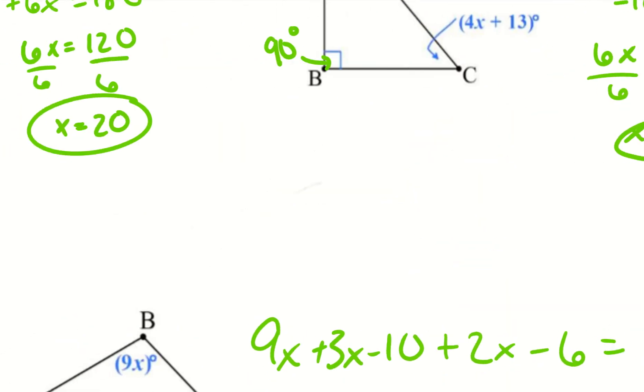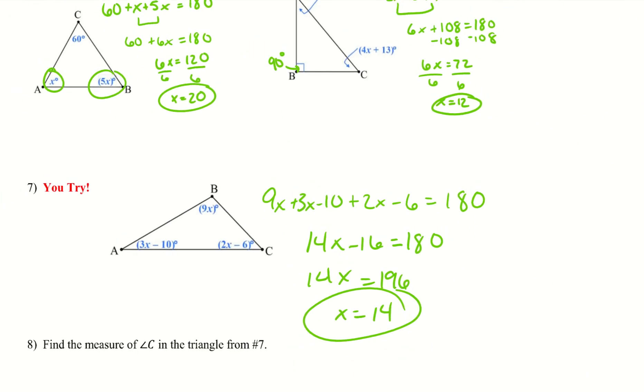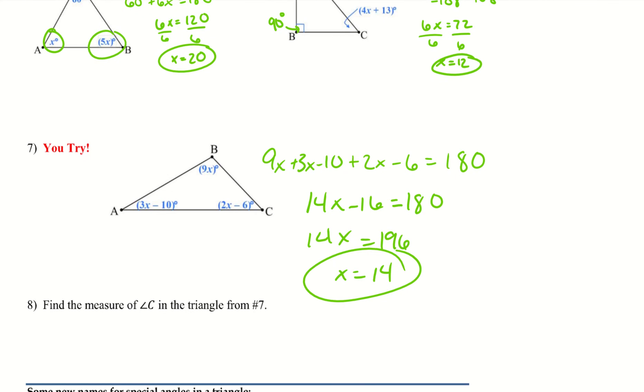Alright, let's go ahead and take a look at what I got here. So number 7, I ended up with x equals 14. So 8, it says find the measure of angle C in the triangle from number 7. So I'm going to take a look at angle C. So 2x minus 6. I know x is 14. So I can do 2 times 14 because I plugged 14 in for x minus 6. I'll solve for that. I ended up with 22. So all I have to do is plug that into my calculator. 2 times 14 subtract 6. We get 22 for 8.